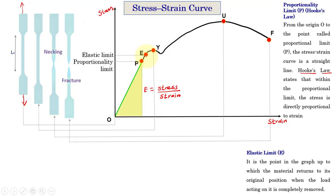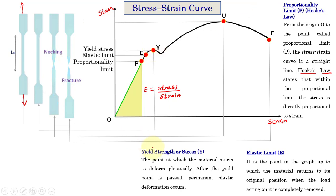This is the elastic limit. After that, we got a point called Y and that is yield stress or yield strength. The point at which the material starts to deform plastically. At this point, the material tends to behave like a plastic material from this point onwards.